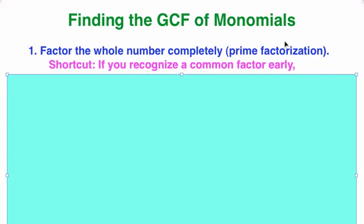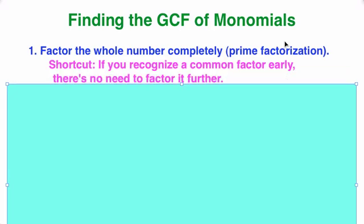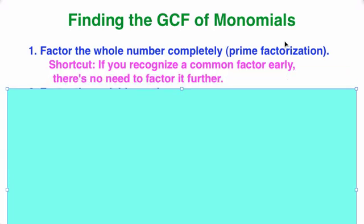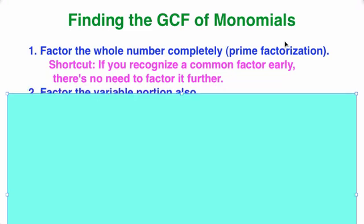But there is a shortcut. If you recognize a common factor early, then there's no need to factor the whole number all the way down — just recognize when you see a common factor, and you can stop there.